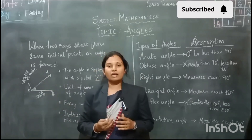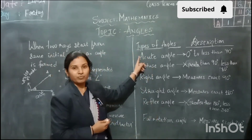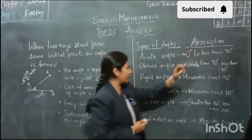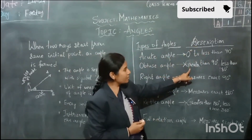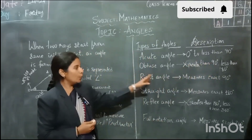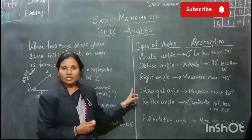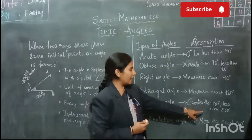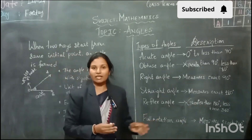Let's focus on what are the types of angle. The first type is the acute angle, which measures between 0 degrees to less than 90 degrees. Next is the obtuse angle, which measures greater than 90 degrees and less than 180 degrees. Next, we have the right angle, which measures exactly 90 degrees. The straight angle measures exactly 180 degrees. The reflex angle measures greater than 180 degrees and less than 360 degrees. And the last one is the full rotation angle, which measures exactly 360 degrees.